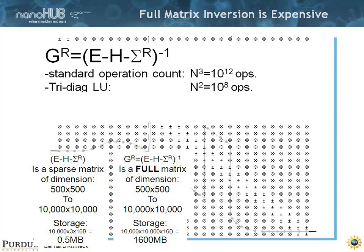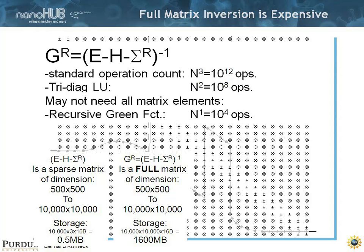And if you do a recursive green function approach that scales as n to the 1, you have about 10 to the 4 operations. You can make this a factor of 10 to the 8 faster. So let's learn how to do that.